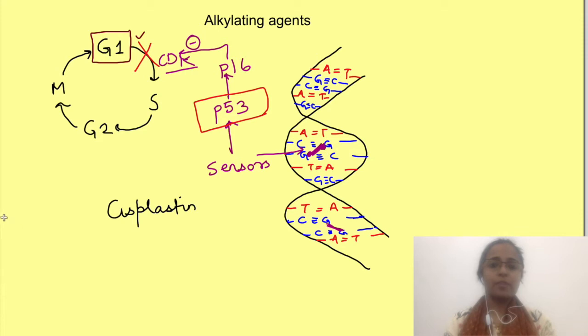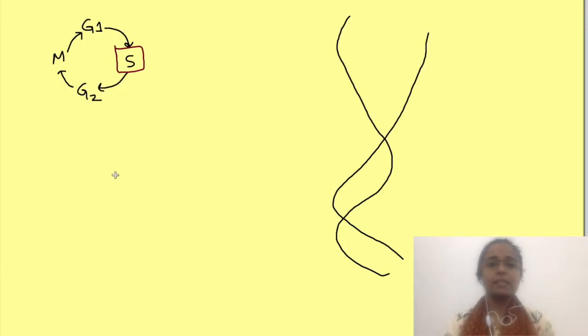Next class of drugs acts in S phase, the DNA synthesis phase. First we should know important requirements for DNA synthesis. DNA synthesis requires that DNA strand should separate properly, which is done by helicase enzyme, and synthesis of new strand should occur which is done by the enzyme polymerase.